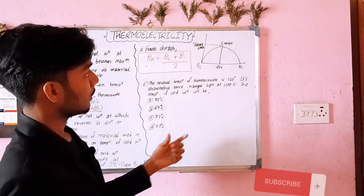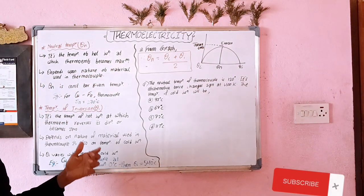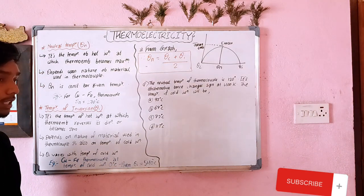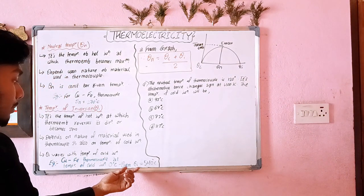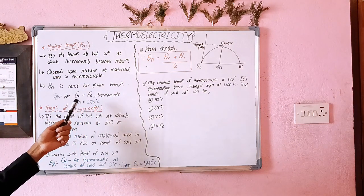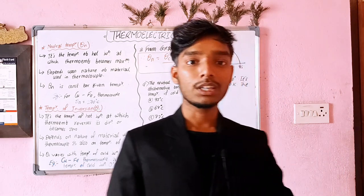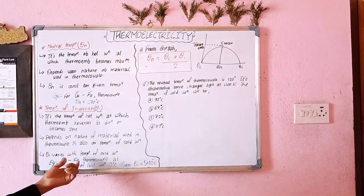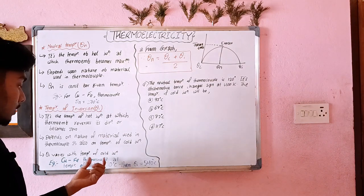The temperature of inversion varies with the temperature of the cold junction — it does not remain constant, unlike the neutral temperature. For a copper-iron thermocouple with the cold junction at 0 degrees centigrade, the temperature of inversion is 540 degrees centigrade.